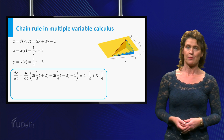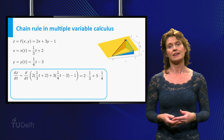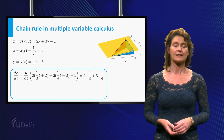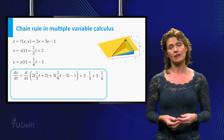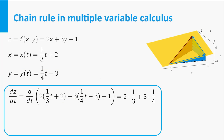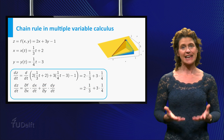Let's see how this works in the example we discussed before. You had the functions f of x and y, x of t and y of t, and you computed the derivative of z with respect to t directly by plugging in the expressions for x and y. Now, applying the chain rule: the partial derivative of f with respect to x equals 2, and the derivative of x with respect to t equals 1 third. The partial derivative of f with respect to y is 3, and the derivative of y with respect to t is 1 quarter. Which is exactly what you found before!